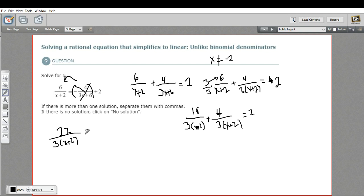Now to get rid of the fraction entirely, I could multiply both sides of this equation by the denominator here. So I'll multiply by 3 times x plus 2, and 3 times x plus 2 over here. It cancels out and I'm just left with 22.